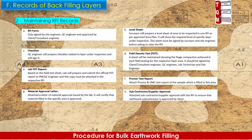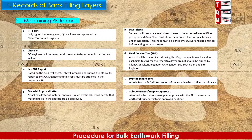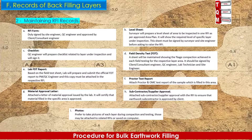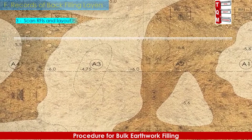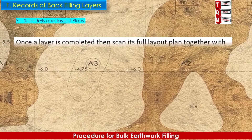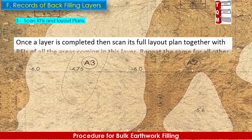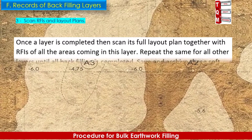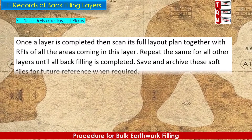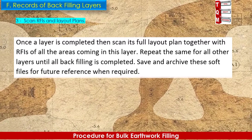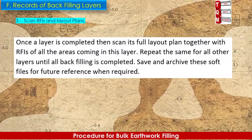Subcontractor approval confirms if the subcontractor is approved by the client. Photos — attach or save all photos in soft form taken during backfilling and testing of the respective layer. When one layer is completed, scan its full layout plan together with RFIs of all areas in that layer. Repeat the same for all other layers until all backfilling is completed. Save and archive these soft files for future reference when required.